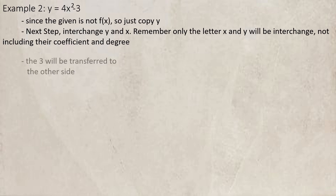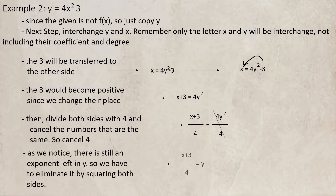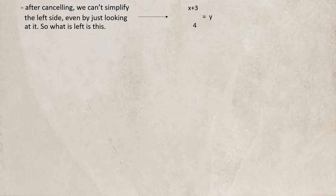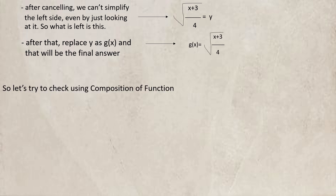Example number 2: y = 4x² - 3. Since the given is not f(x), just copy y. Interchange y and x — remember, only the letters x and y will be interchanged, not including their coefficients and degree. The 3 will be transferred to the other side and will become positive, giving x + 3 = 4y². Divide both sides by 4 and cancel, so x + 3 over 4 = y². Since there is still an exponent on y, eliminate it by taking the square root of both sides. The square root of (x + 3)/4 equals y. After that, replace y with g(x).